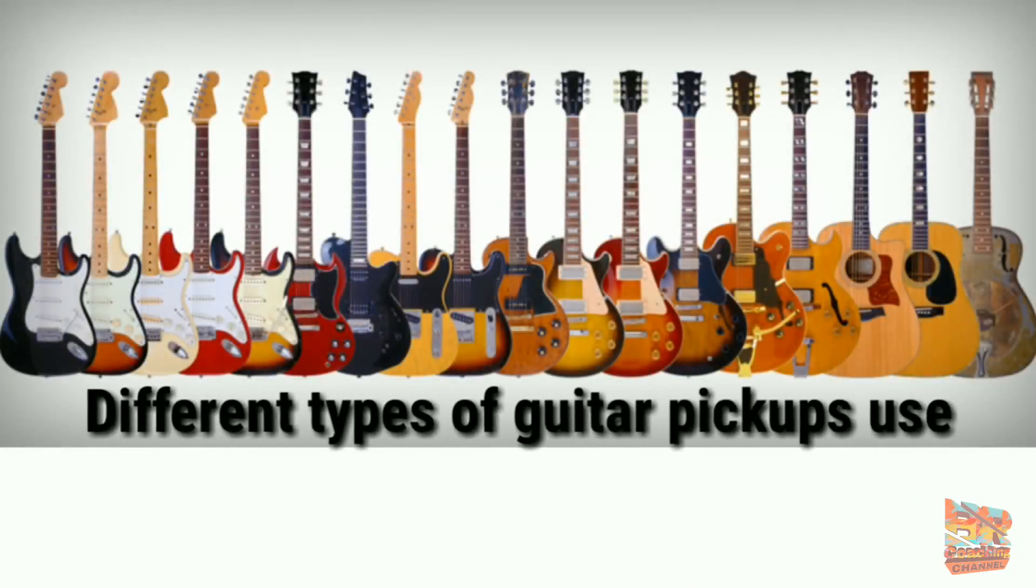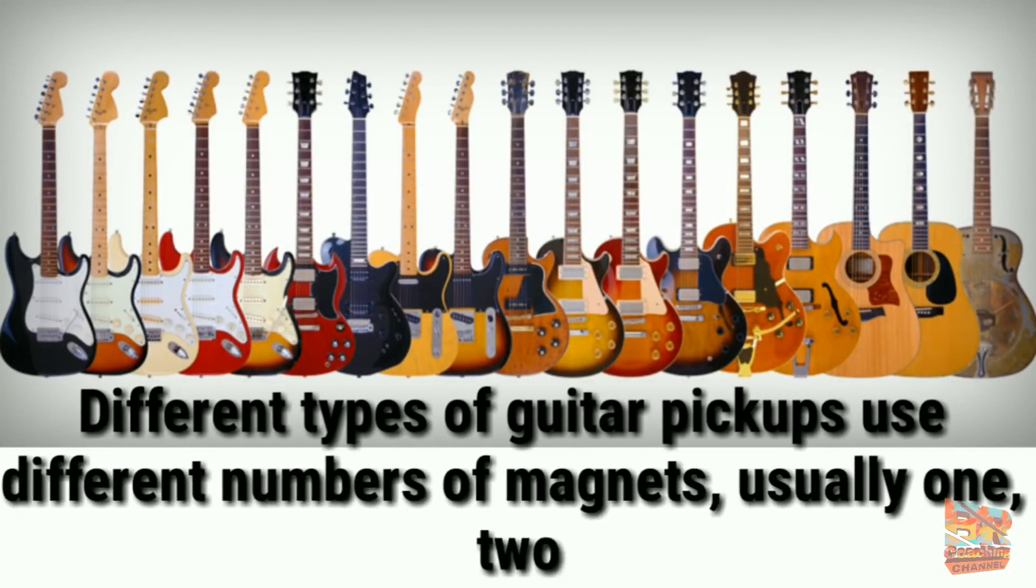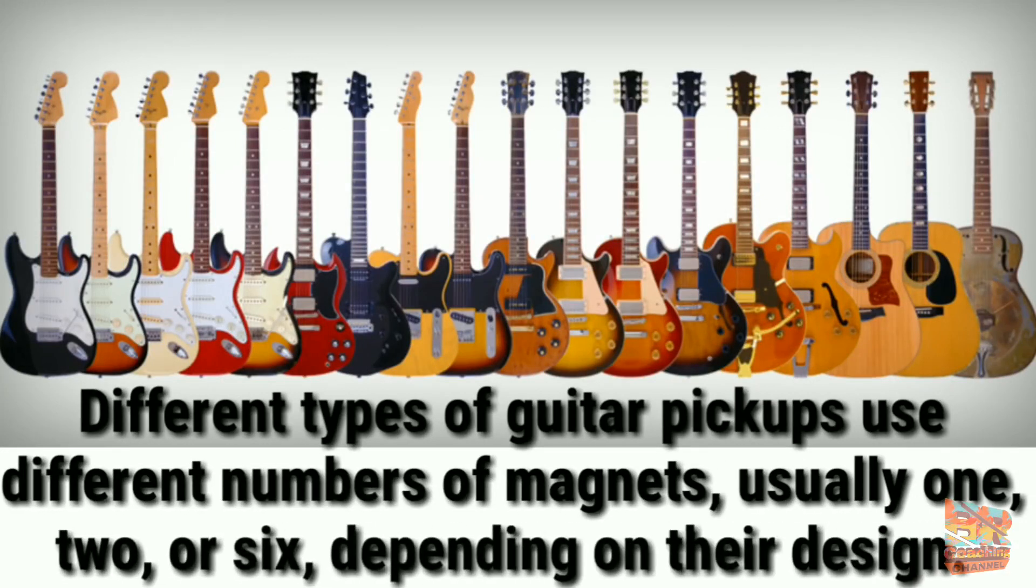Different types of guitar pickups use different numbers of magnets, usually one, two, or six, depending on their design.